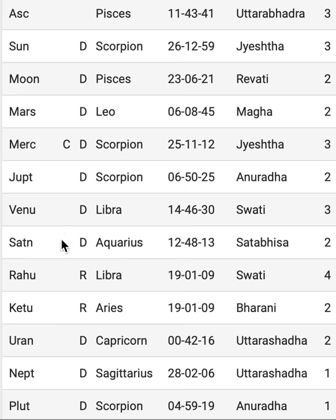The third key planet is Saturn, because Saturn is the karaka for the Dashamsha chart — it shows the labor we need to put in for success in any field. Saturn here is direct, in Aquarius, in Shatabhisha nakshatra. Shatabhisha is also related to something very secretive, something hidden, something you don't like to show to others — not necessarily bad, but something you want to keep very private.